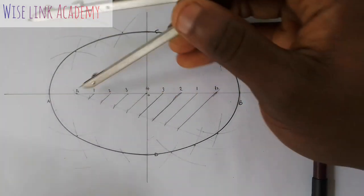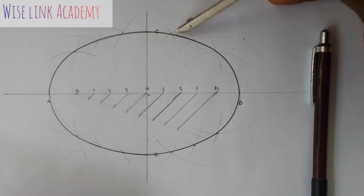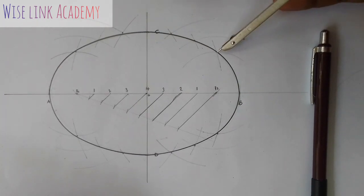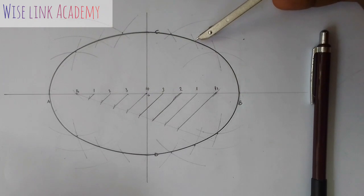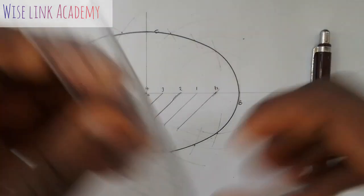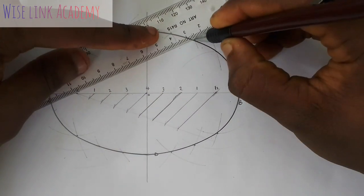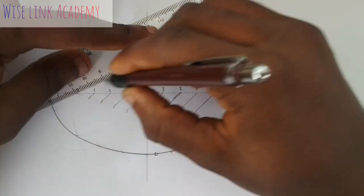This is my F1 and F2. I will connect it to any point I want my ellipse, my tangent and normal to be. Let's just choose this point. Let's say this point here. Let's choose this point. So, from this point here, I will take my meter row, this point, take it to F1 with a faint line.